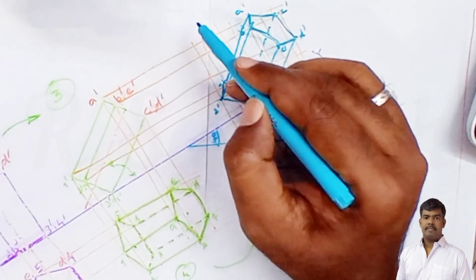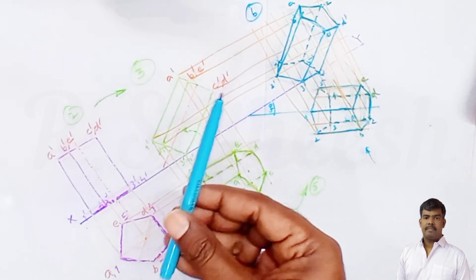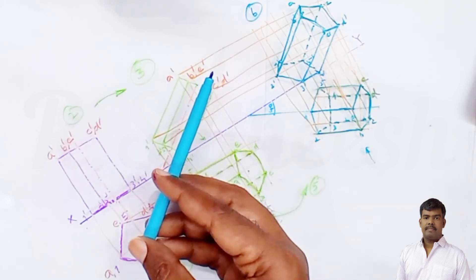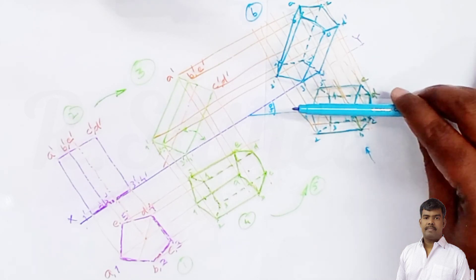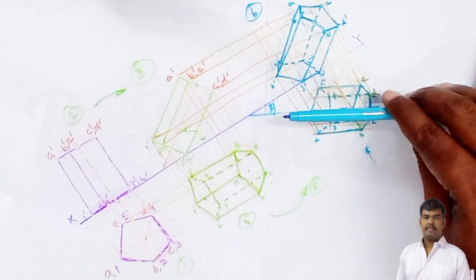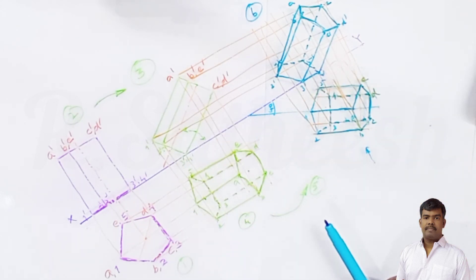So we have obtained all six diagrams: Stage 1 is the initial position, Stage 2 is inclination to HP (front and top view), and Stage 3 is the final inclination to VP (final top view and front view). This completes the inclined-to-both-planes problem for the given pentagonal prism. Thank you.